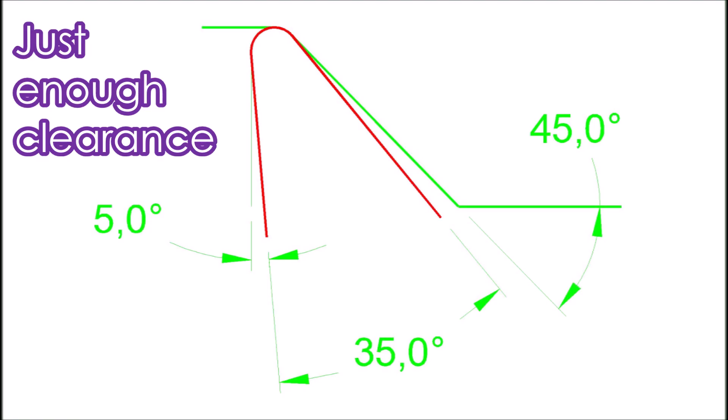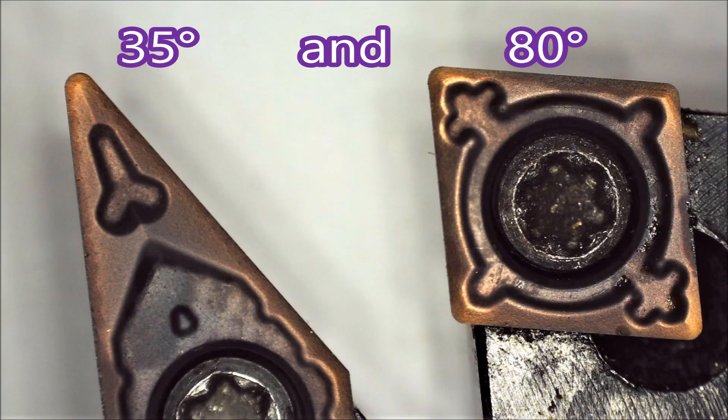Here you can see there's just five degrees of clearance on the back edge of the insert. This lets you see just how much more robust the point is on the 80 degree insert.